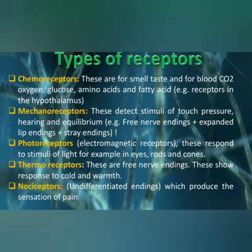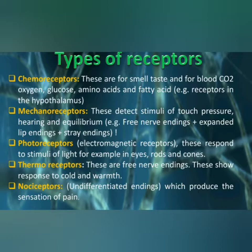Next are mechanoreceptors. Mechanoreceptors receive pressure or touch stimulus, and also handle hearing and equilibrium balance within the body. These include free nerve endings, expanded tip endings, and strain endings.